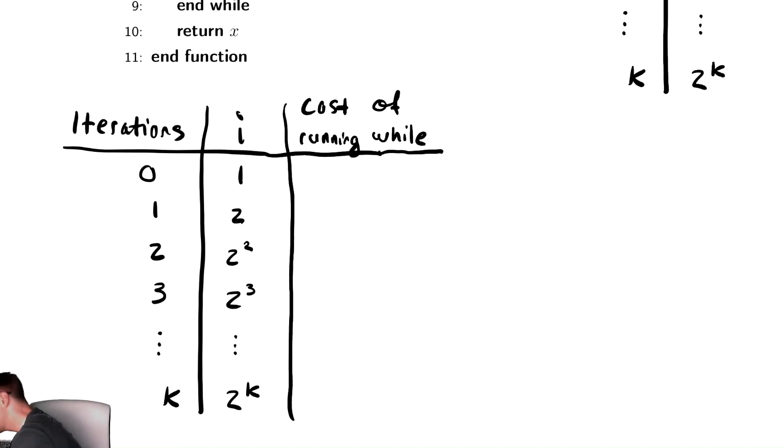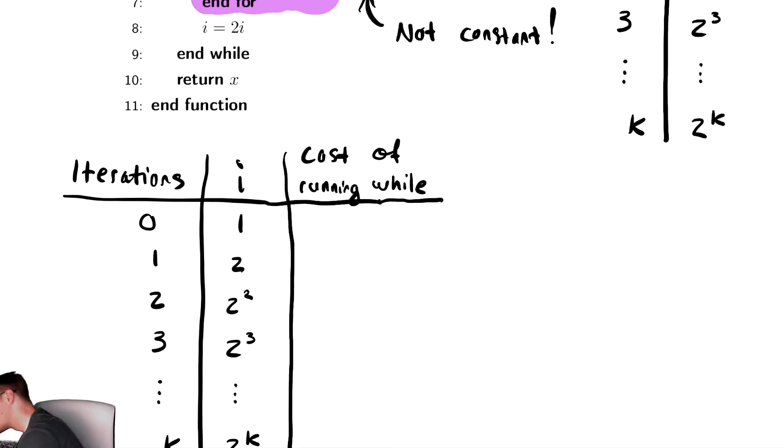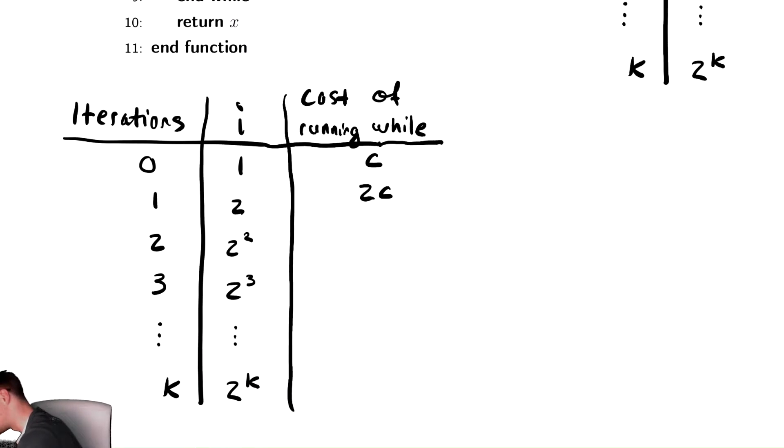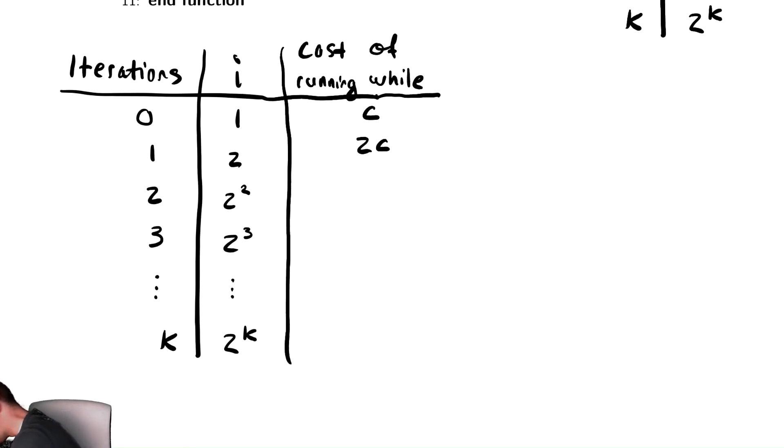When i is equal to 1, which is on the first iteration there, the cost is ci. So it's c. And then i equals 2, and the cost is still ci. That cost doesn't change. The value of i changes. So the cost would be 2c, because it's just ci. And then we'll have 2 squared c, and then 2 cubed c, and then eventually 2 to the k times c.